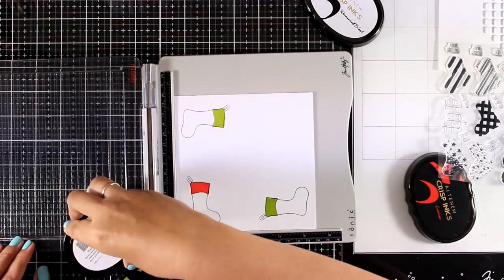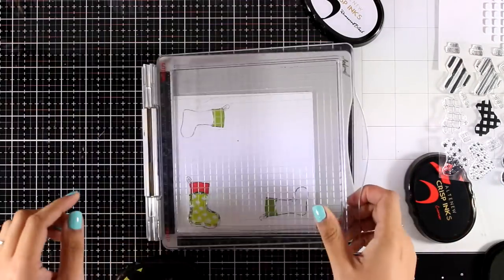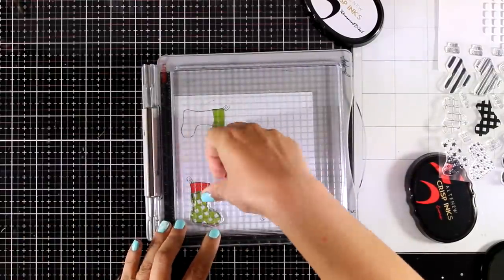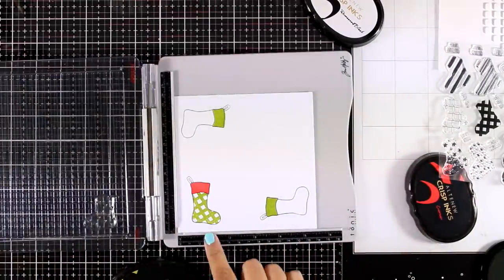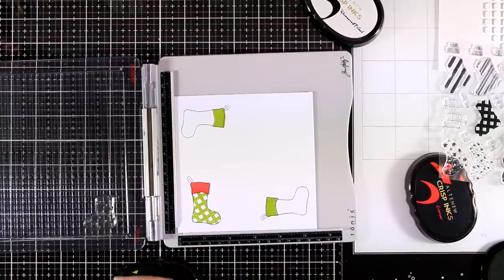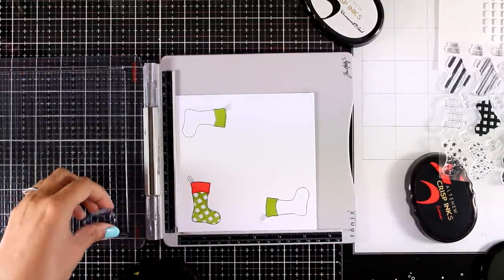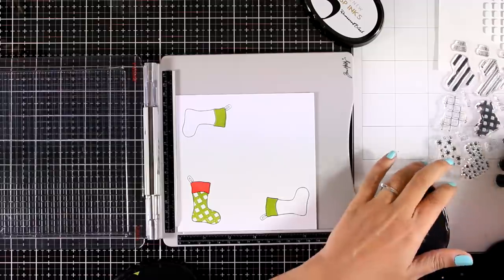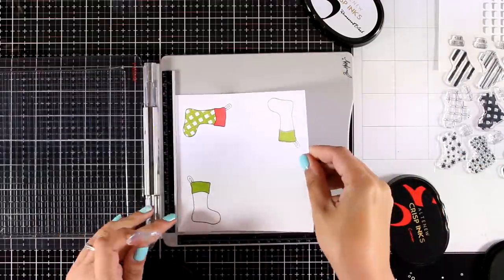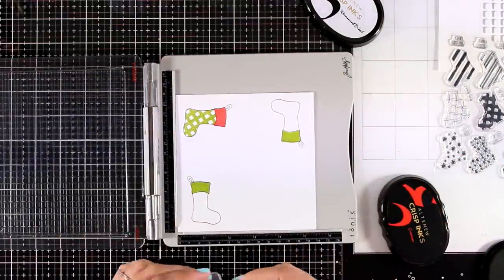Now I have used the same stamp to stamp all the top parts of my stockings using different colored inks, and now I'm going to choose different designs from the stamp set to fill in the lower part of the stocking. Now as you will see, I will try to introduce both colors that I'm working with on all the stockings.